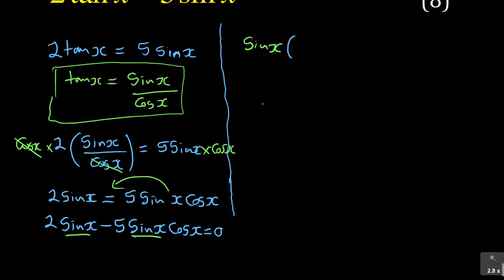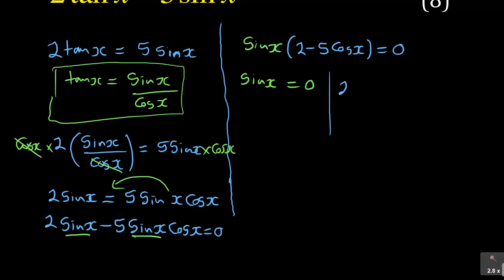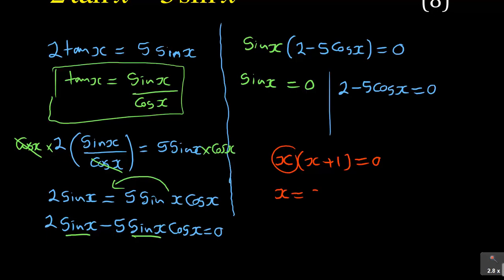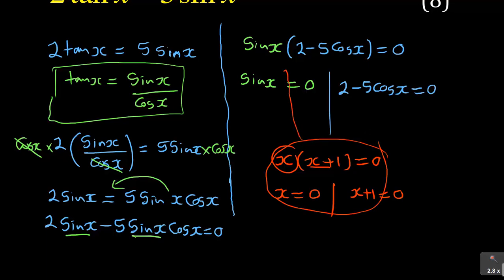So we have sin(x)(2 − 5cos(x)) = 0. You need to know factorization at this stage. You've got two answers: either sin(x) = 0, or 2 − 5cos(x) = 0. It's like when you have x(x + 1) = 0 — either x = 0 or x + 1 = 0. This is identical to what we are having in that particular scenario.